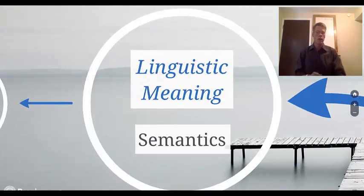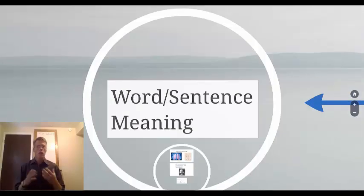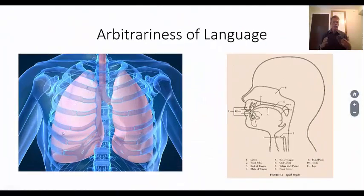We're going to start on the linguistic meaning side, looking specifically at taboo words. So when we talk about linguistic meaning, we're talking about the word or sentence meaning. And just to remind you of stuff that we've covered in previous videos, language is an arbitrary sign system.